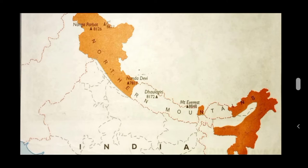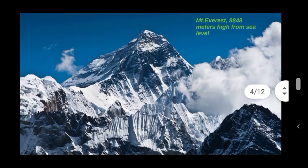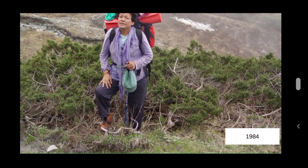The important mountain peaks located in India are K2 in Jammu and Kashmir, Kangchenjunga in Sikkim, and Nanda Devi in Uttarakhand. The highest peak in the world, Mount Everest, is located in Nepal at 8,848 meters above sea level. Bachendri Pal was the first Indian woman to climb Mount Everest in 1984.